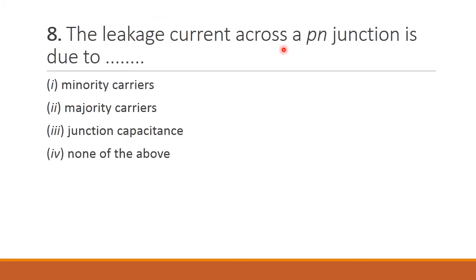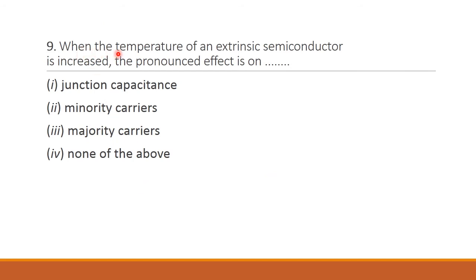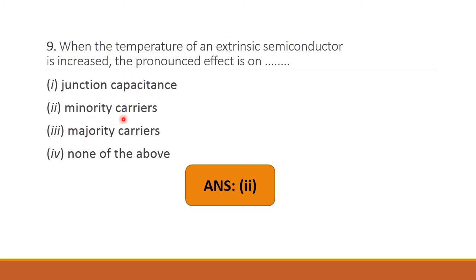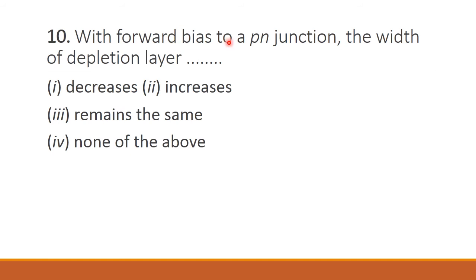Next question: The leakage current across the PN junction is due to — minority carriers, majority carriers, junction capacitance, none of the above. The leakage current will occur due to minority carriers — option 1 is the right answer. Next question: When the temperature of an extrinsic semiconductor is increased, the pronounced effect is on — if you increase the temperature of an extrinsic semiconductor, there will be effect only on minority carriers — option 2 is the right answer. Next question: With forward bias to a PN junction, the width of the depletion layer — forward bias means there will be flow of current, so the width of the depletion layer decreases. Option 1 is the right answer.